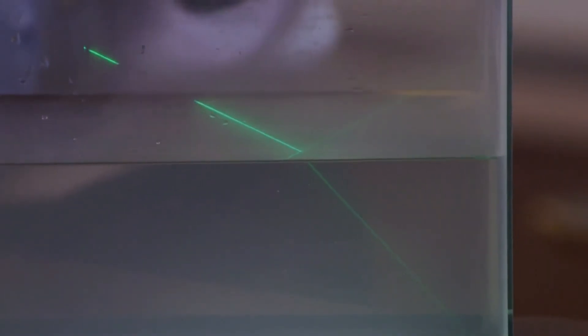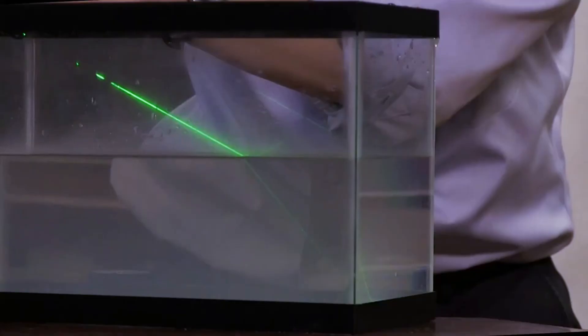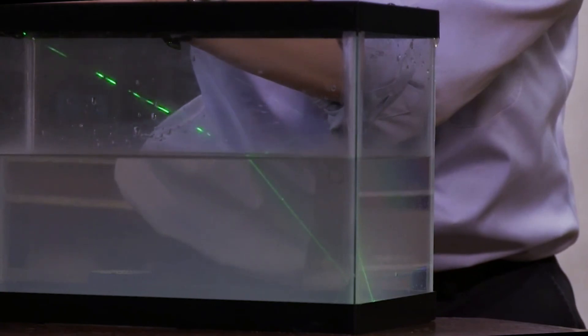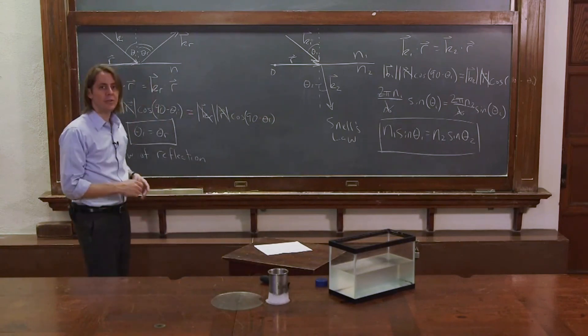So there you can see the sharp bend of the beam as it goes into the denser medium in the water. It's falling towards the normal because the water has a higher index. So that's what we can learn about these angles. Now let's look at the amplitudes.